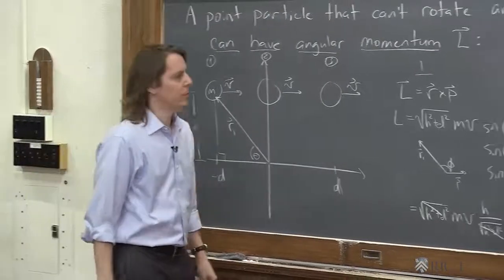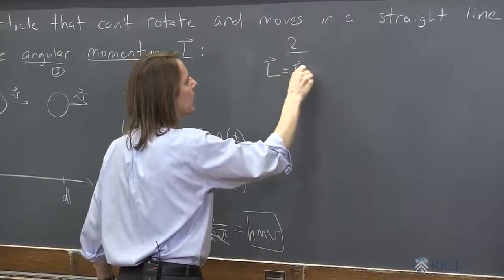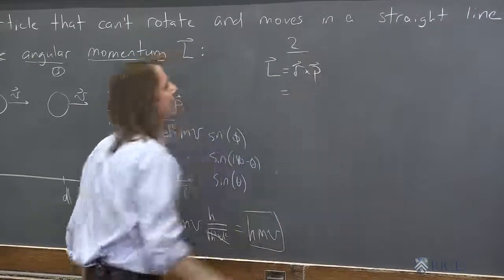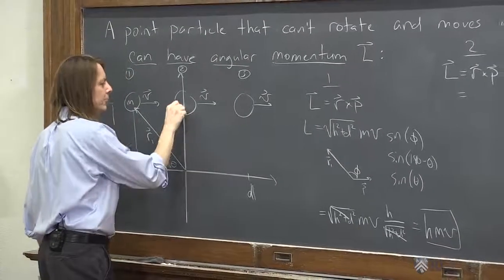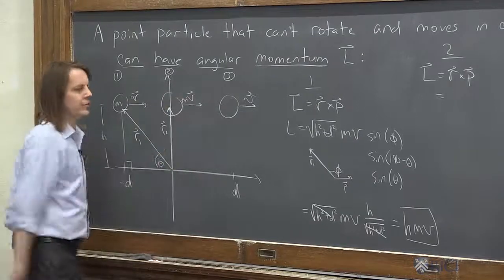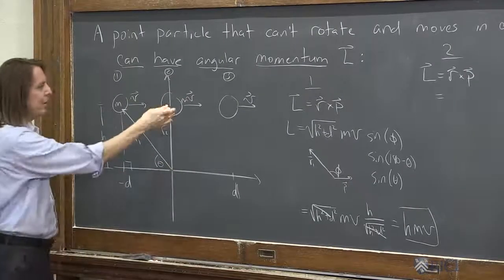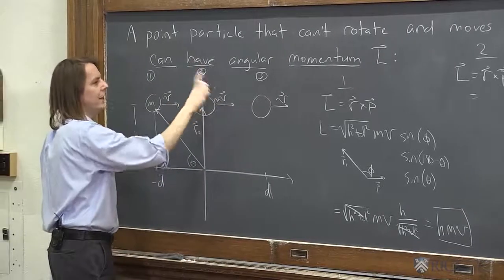Let's do position two. All right. So we'll go a little quicker. L equals r cross p. Let's see. Now. This time, r straight up. r2. p. mv. Straight that way. So right here we're at 90 degrees. You can see. If I bring this tail to tail with that, the angle is 90 degrees.